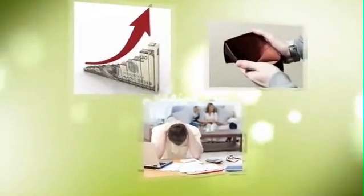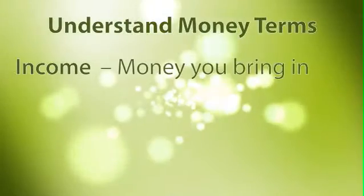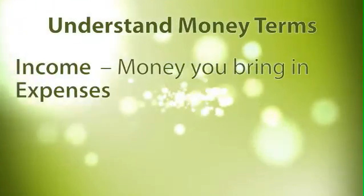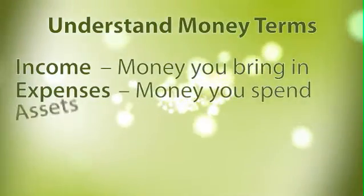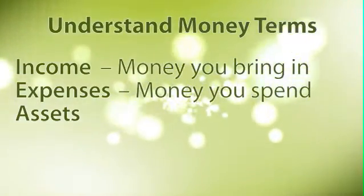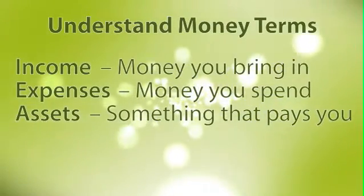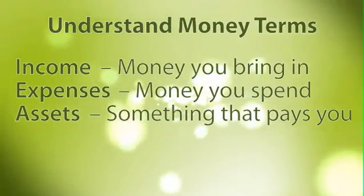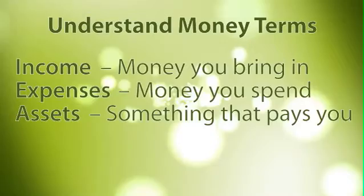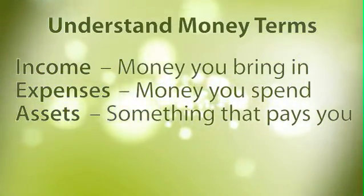To understand this, I need to make sure you understand some basic business terms in the way that I'm using them. The words you need to know are: income, which means money you bring in; expenses, which means money you spend; and assets, which is the most confusing one. An asset is defined as something that pays you. If you're an accountant or a financial planner, I just raised your eyebrows a little because the traditional definition of an asset is things you own.